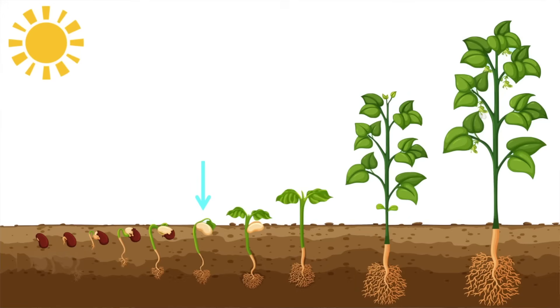Then the shoot grows upwards through the soil towards a source of light and air. The seed coat falls off during this process.